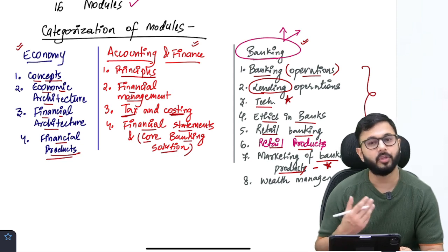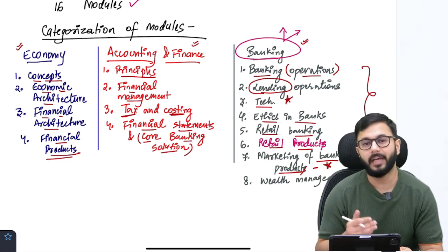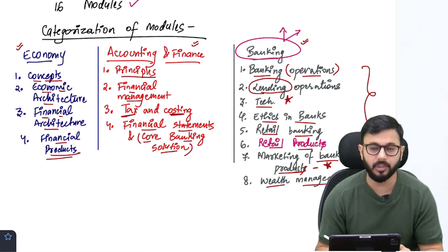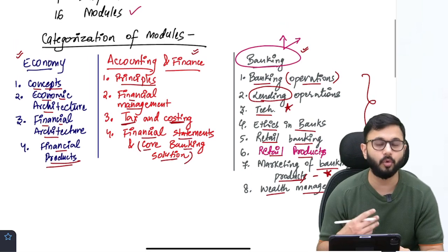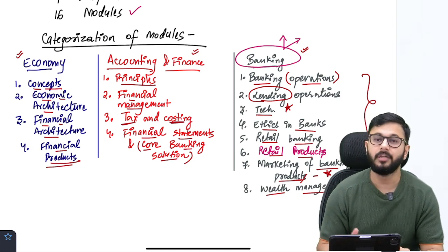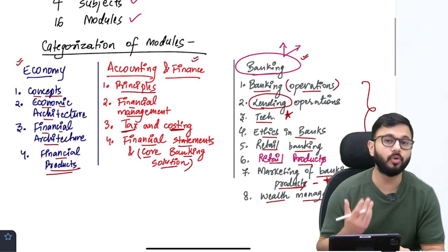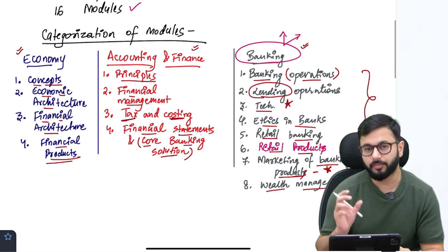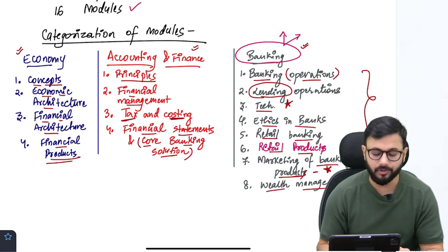And the last is wealth management. How do you manage your wealth as a bank as well as for individuals? How do you make sure that their wealth management is also managed by you through the bank? So all these things, products related to the banking system.